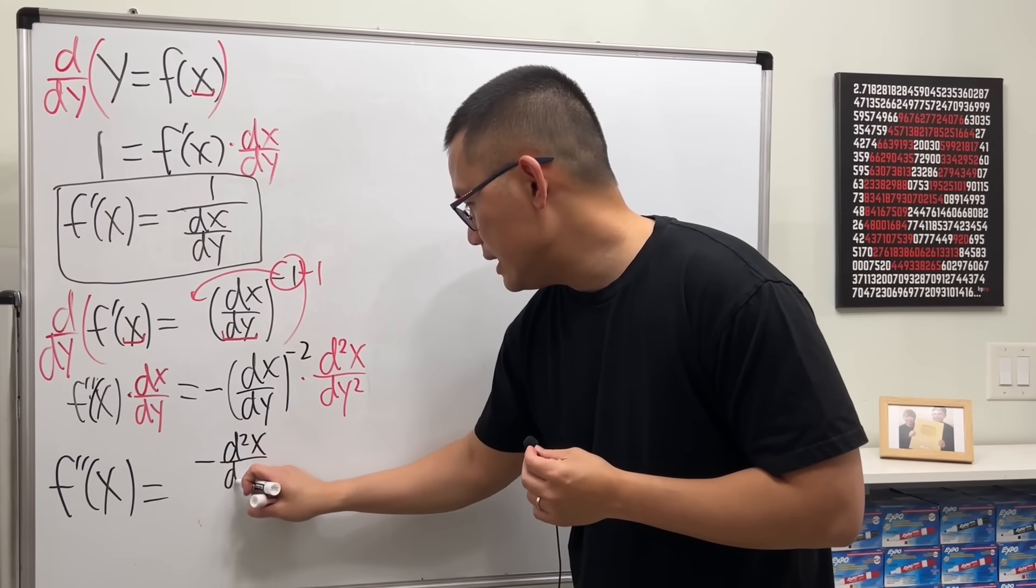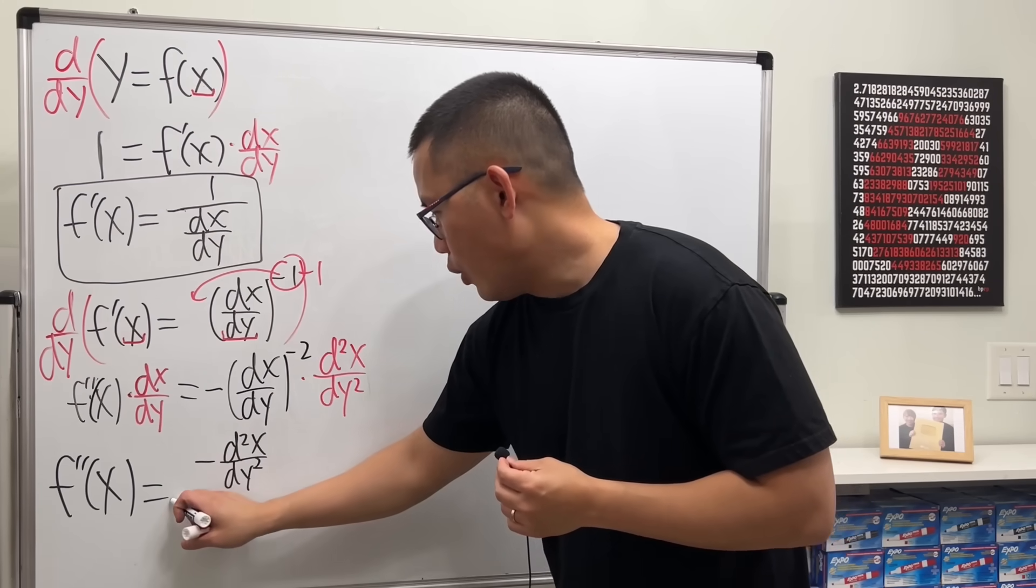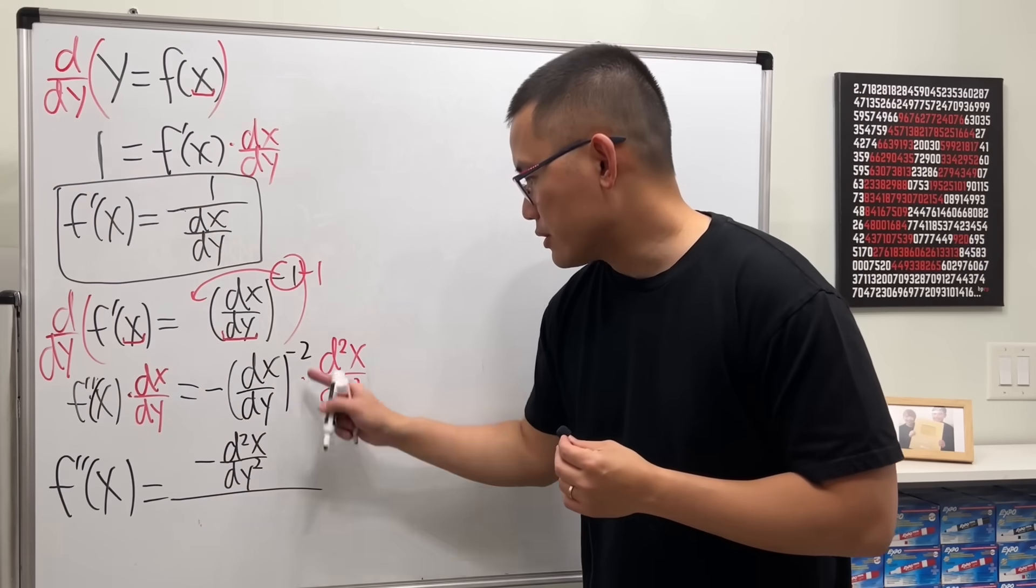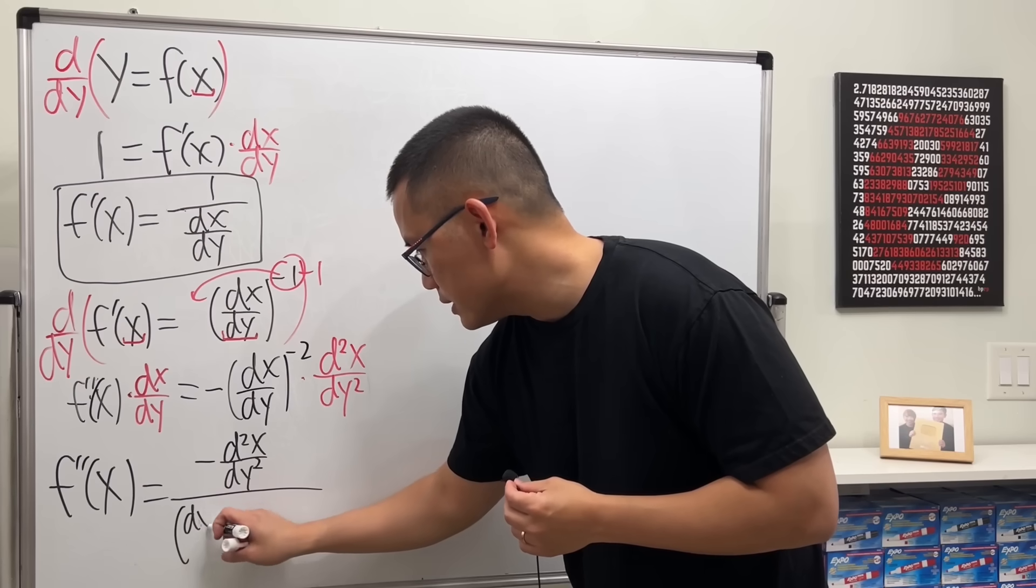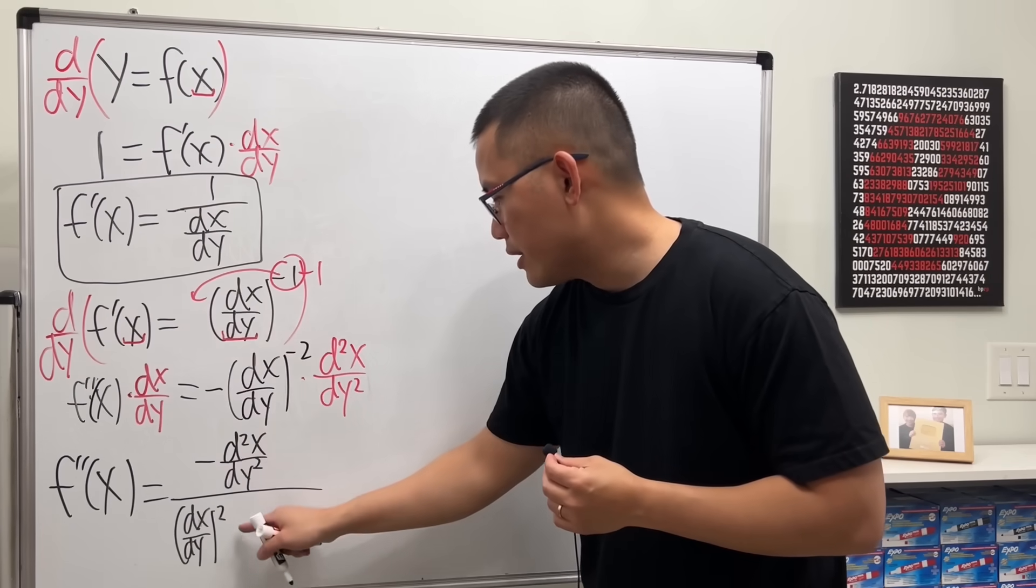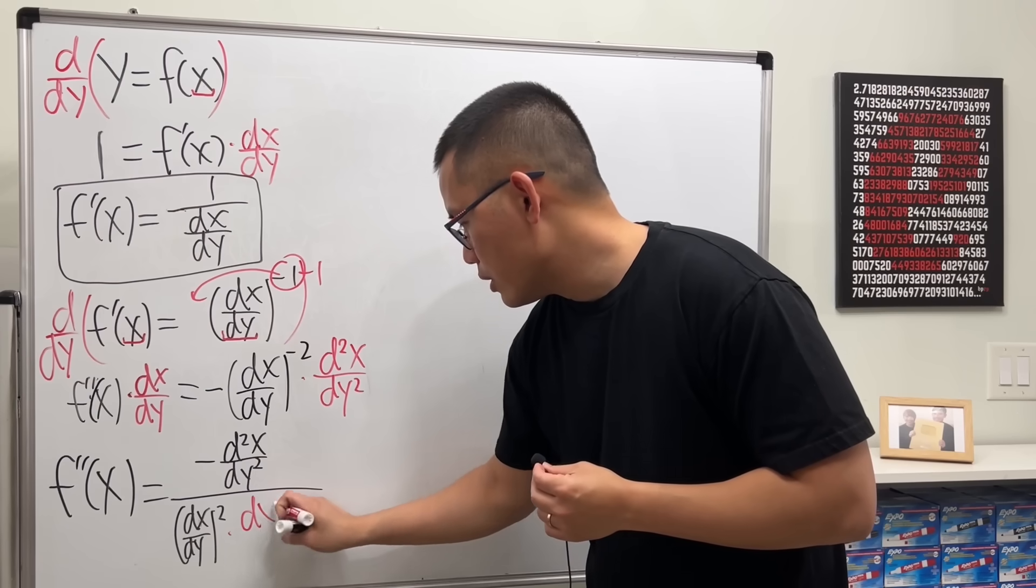Firstly though, we have a negative, and this is on the top as well, so we can write negative d²x/dy² over, this is on the bottom. Likewise, we have one more right here, so I will put this down right here on the bottom.